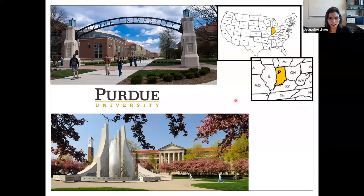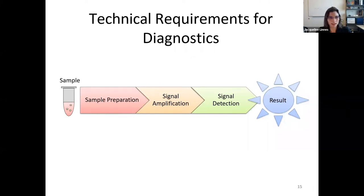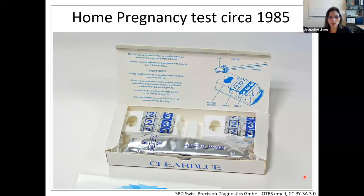I want to note that a lot of diagnostics have the same technical requirements, very broadly speaking, which means you have to collect a sample, prepare your sample, perform some sort of signal amplification — whether that is collecting nanoparticles in one place for a visual line to appear, or whether that is amplifying the nucleic acids that you're looking at — and then detect that signal, and you end up with a result. One of my favorite examples is probably one of the very first point-of-care tests that has been developed, which is something like the home pregnancy test, available since 1985, and is the quintessential lateral flow test that we think of for pregnancy, malaria, HIV, used around the world.